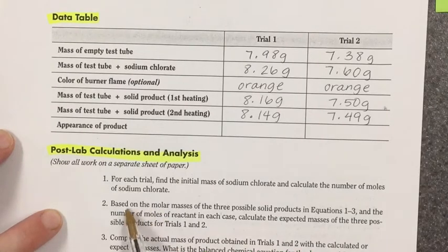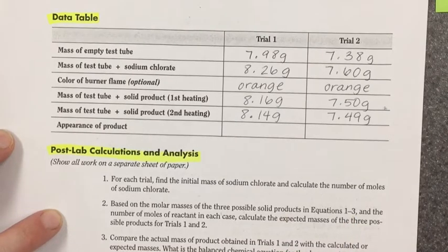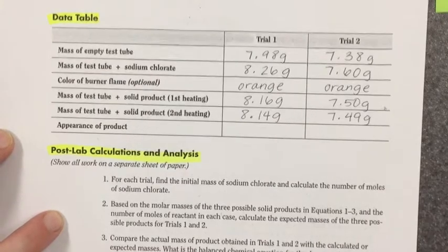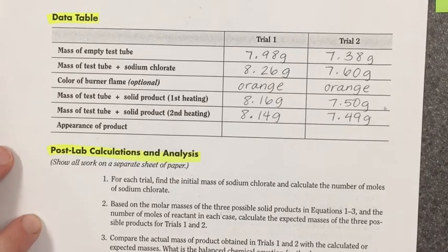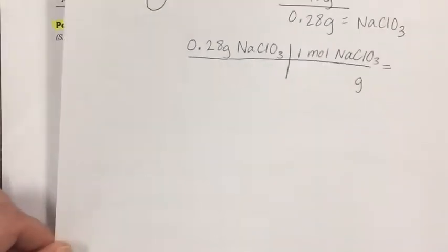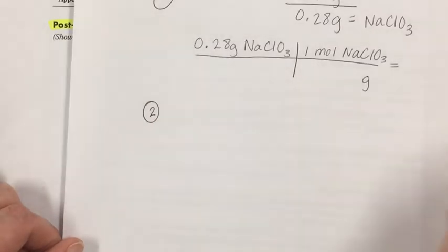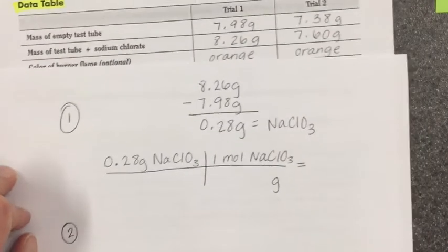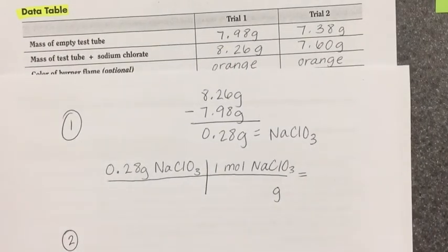For question number two, based on the molar masses of the three possible solid products in equations one through three, and the number of moles of reactant in each case, calculate the expected masses of the three possible products for trial one and trial two. So, again, I'm only going to use trial one. You guys will have to repeat everything a second time for trial two. But for question number two, what you guys need to do is use the equations from page one. So, let me show you what I mean. Really quickly, let me go ahead and just calculate for a second. Give me a second.